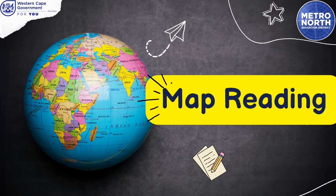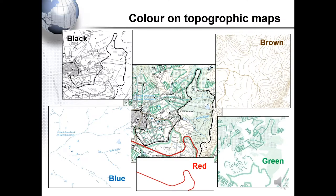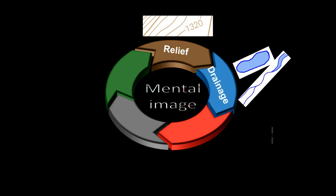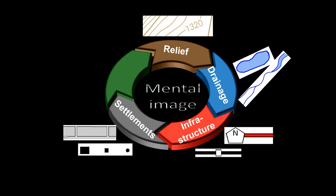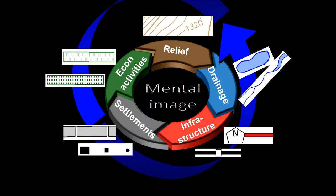Map reading. When reading and interpreting maps, it's almost like reading a book. Just as you get to know characters, in map work you have to know the different colors on your map and what they represent. Knowing all the colors will help you create a mental image. Our contour lines represent relief, drainage, infrastructure, settlements, and economic activities represented by agricultural land. All these elements will work together to help you create your mental image.